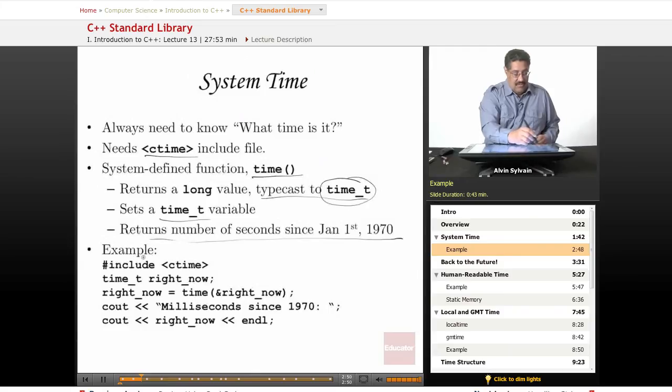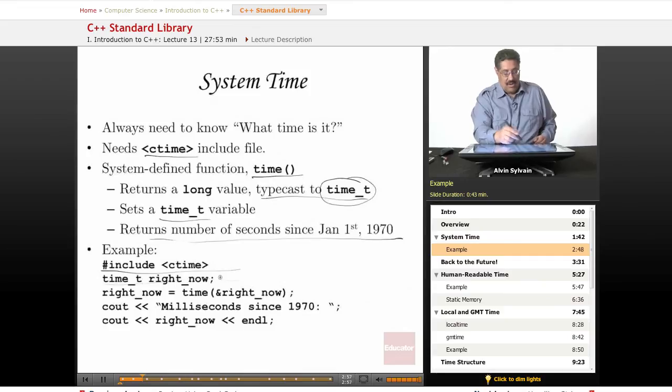Here's an example. So here we are including the C time include. We're declaring a variable time_t. We're going to call it right_now. And then we're going to get the time.